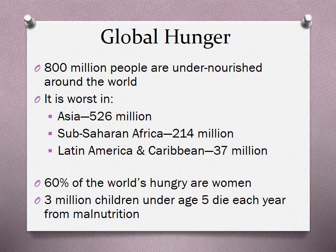So let's talk about hunger. 800 million people are undernourished around the world — that's almost a billion, so almost one in seven are hungry in this world. It is worst in Asia, with 526 million people — half a billion people.